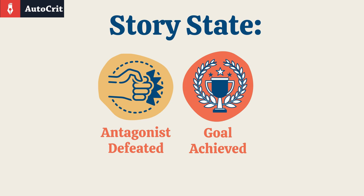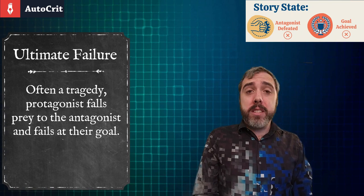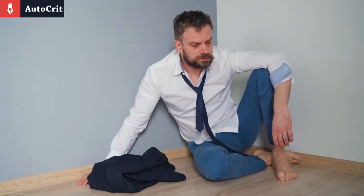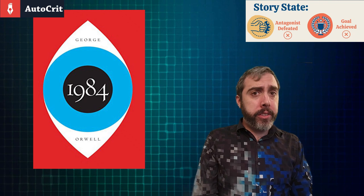Does the antagonist ever win? But of course they do. Antagonist not defeated. Goal fail. The obvious consequence of the antagonist not being defeated is that the hero doesn't get their goal. The bleak ending of 1984 is a good example. In that story, the main character's attempt to thwart Big Brother is completely undermined to the point where he ends up even liking Big Brother himself.